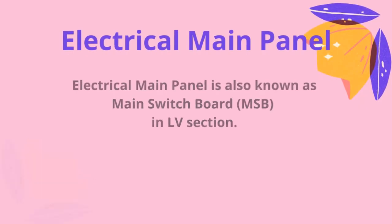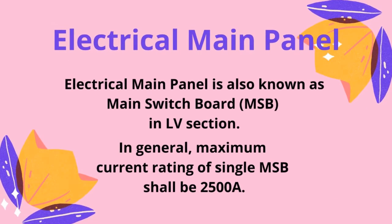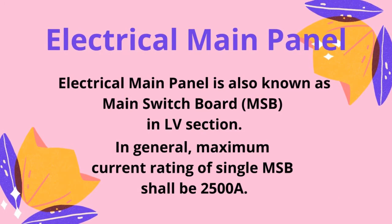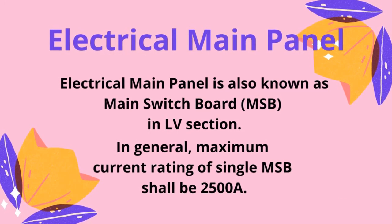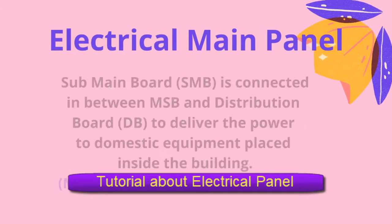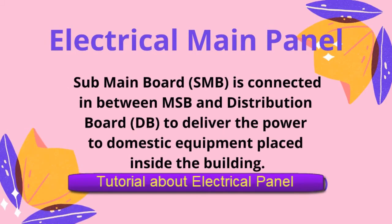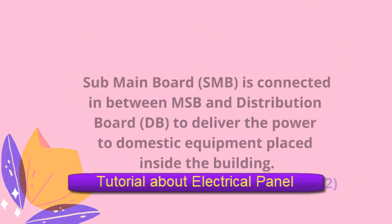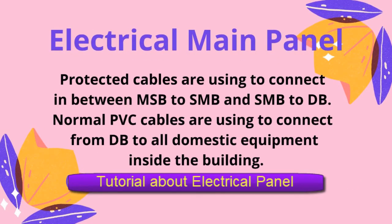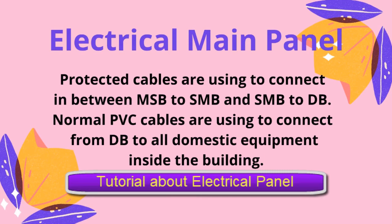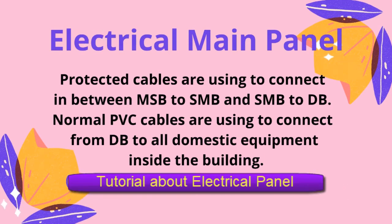The electrical main panel is known as the main switchboard in the LV section. In general, the maximum current rating of a single MSB shall be 2500A. The sub-main board is connected between the MSB and the distribution board to deliver power to domestic equipment inside the building. Protected cables are used to connect between MSB and SMB, and SMB to DB. Normal PVC cables are used to connect from DB to all domestic equipment inside the building.